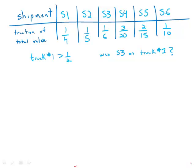Six shipments of machine parts were shipped from a factory on two trucks, with each shipment entirely on one of the trucks. Each shipment was labeled either S1, S2, S3, S4, S5, or S6.